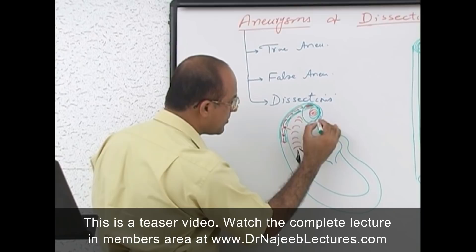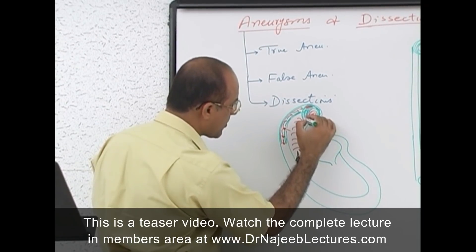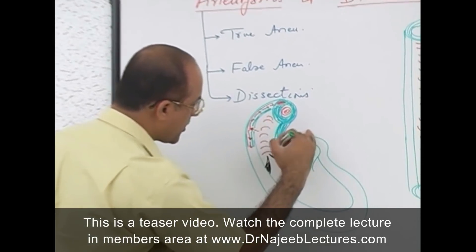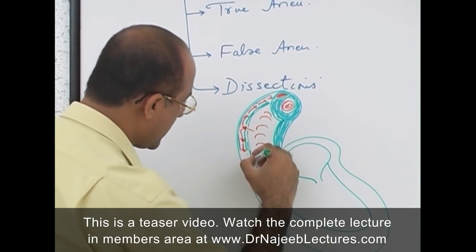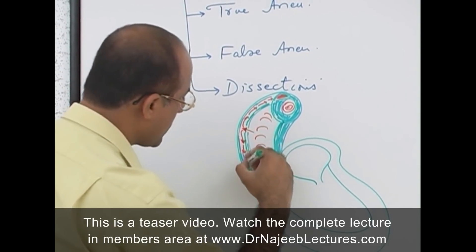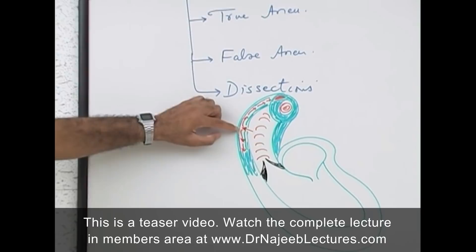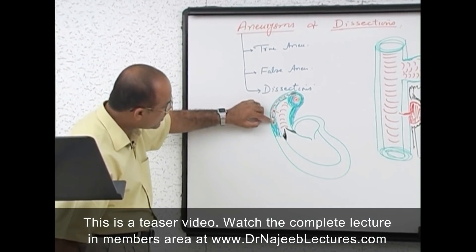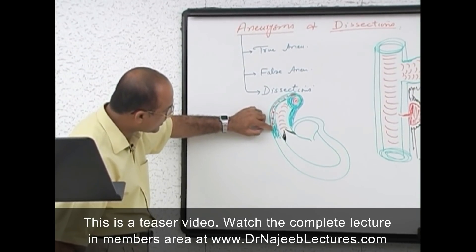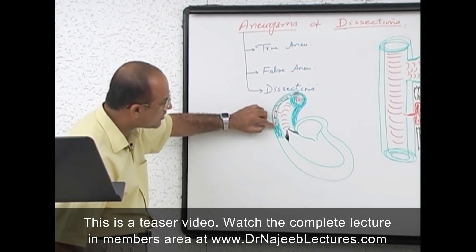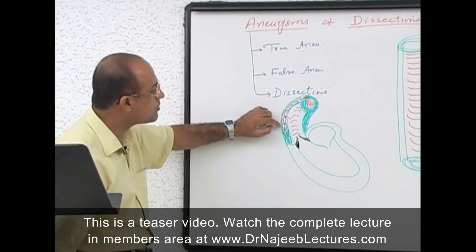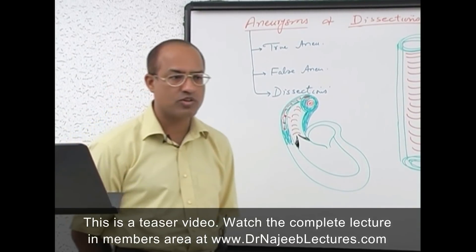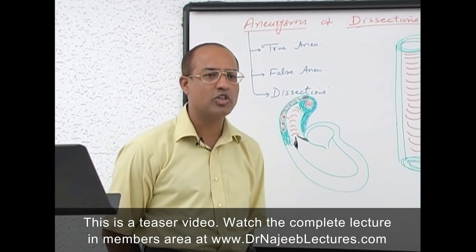This jet of blood produces an advancing hematoma within the wall, splitting and dissecting the layers of the arterial wall. In old times this was wrongly called a dissecting aneurysm, but now it is simply called a dissecting hematoma.